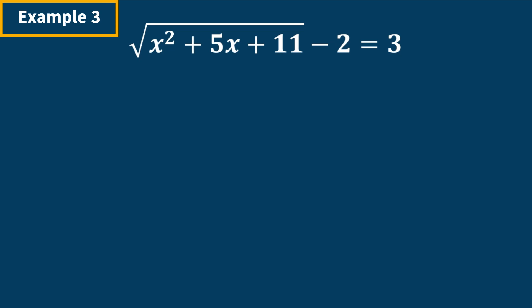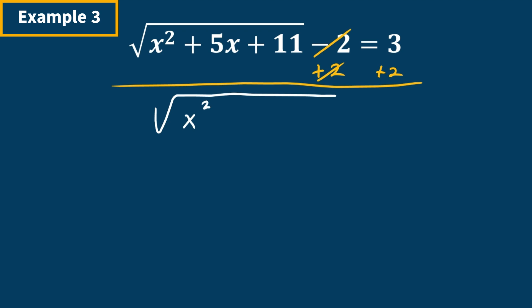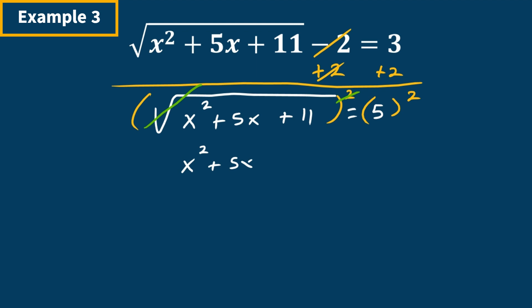Example three: we want to solve this problem. The first step as always is to get the radical by itself, so we move the 2 over to the right-hand side. The 2s cancel and we have the square root of x squared plus 5x plus 11 is equal to 5. From here we cancel the square root by raising both sides to the second power. The radical and the 2 cancel, leaving x squared plus 5x plus 11 equals 5 squared, which is 25.